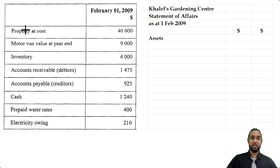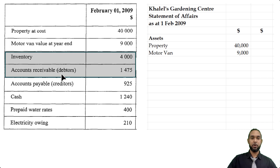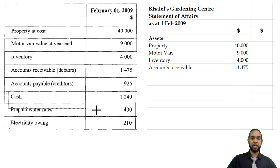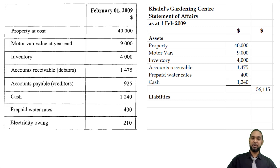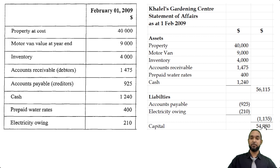We'll start with property at cost and motor van value at year end — those are the only two non-current assets. Then we have inventory and accounts receivable of $4,014.75. We also have cash and the prepaid water rates as current assets. We'll put a subtotal for the assets. For liabilities, we only have two: accounts payable of $925 and electricity owing — that's an accrued expense, a current liability. Those two items give a subtotal of $1,135. When we subtract that from the assets, we get capital of $54,980.